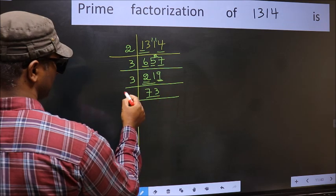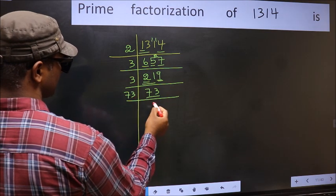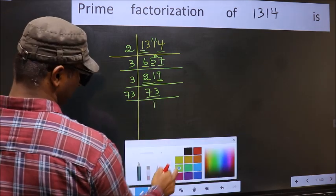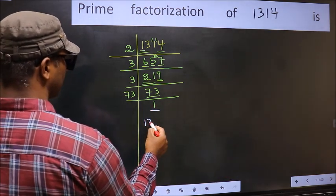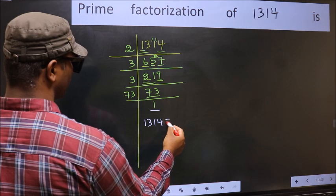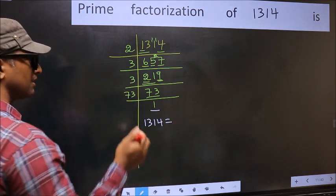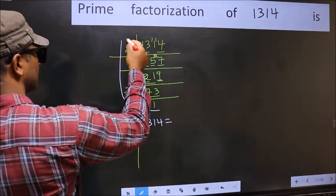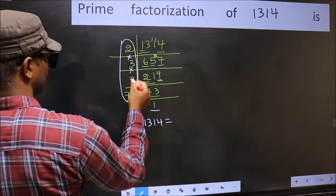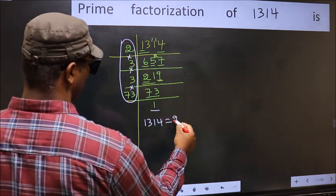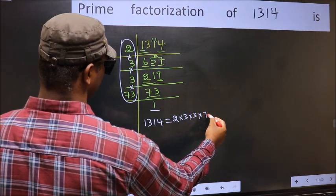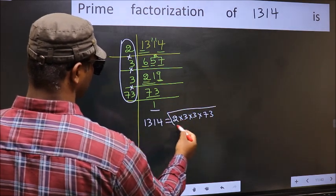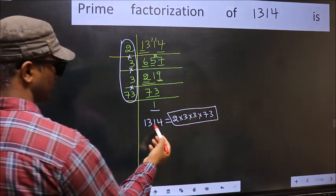73 is a prime number. So 73 times 1 is 73. So we got 1 here. So the prime factorization of 1314 is the product of these numbers. That is 2 times 3 times 3 times 73. This is the prime factorization of 1314.